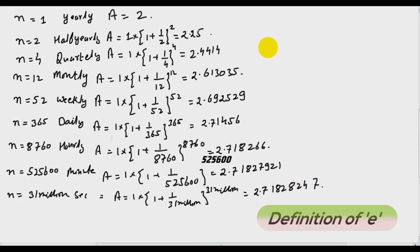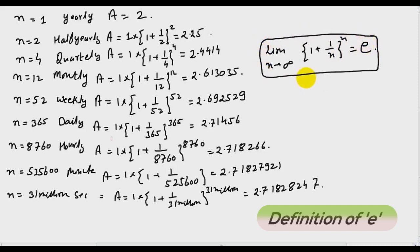He made a generalized case: when limit n tends to infinity, 1 plus 1 by n raised to power n is e. And this is the definition of e given by Jacob Bernoulli while working on compound interest in year 1683.